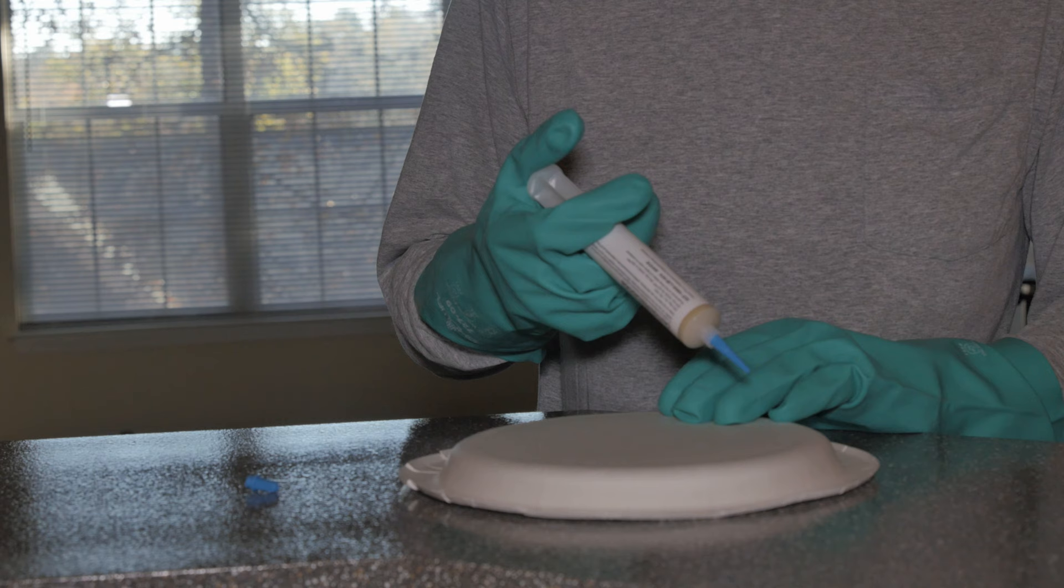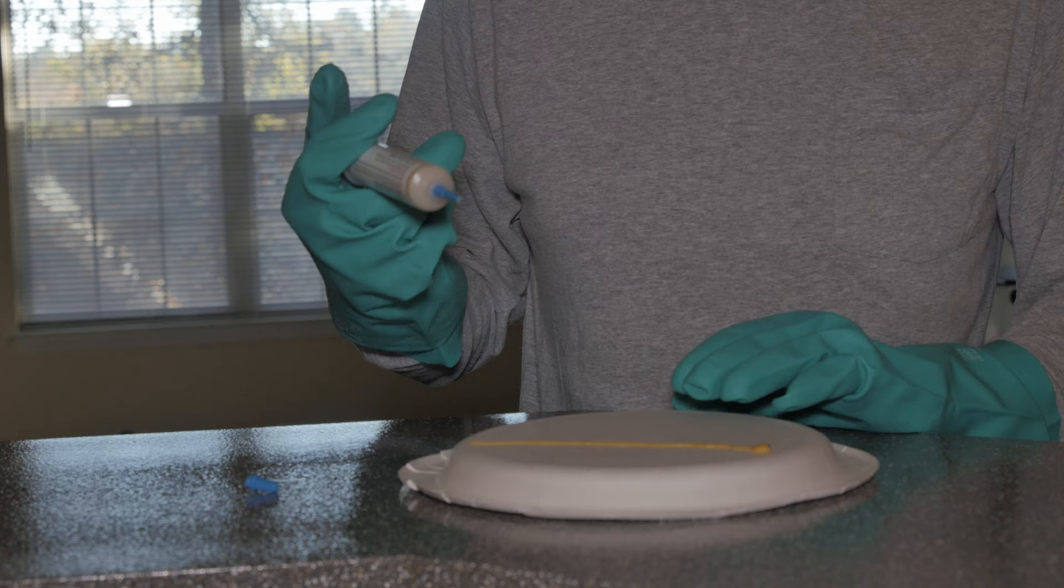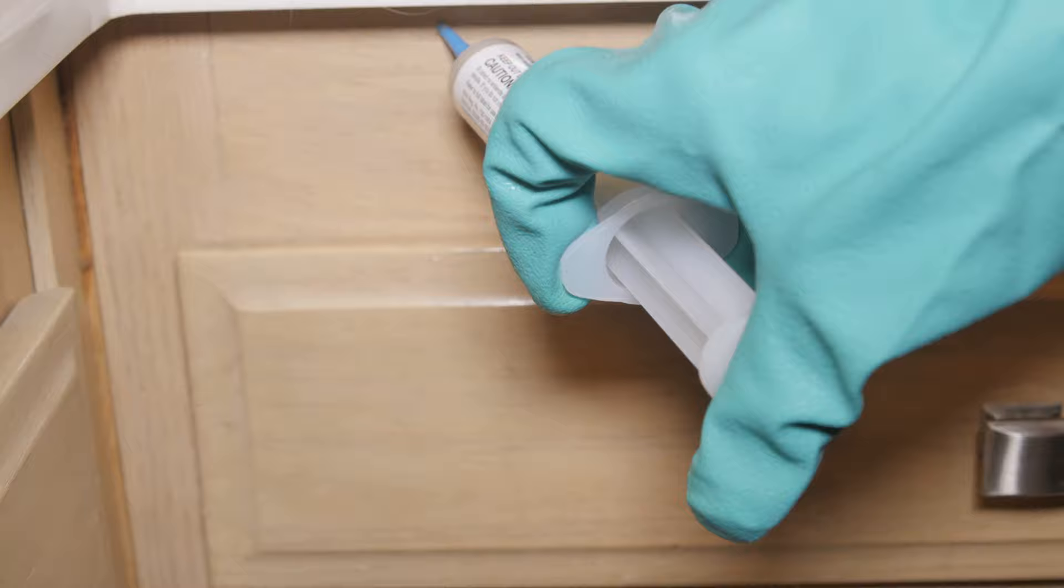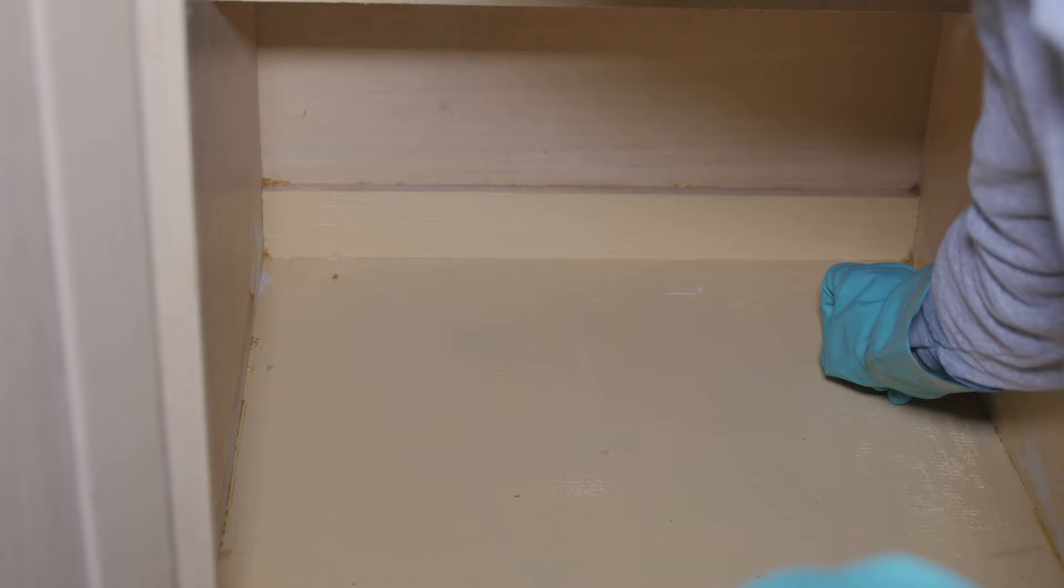Do not apply the bait in a long bead like caulk or in large spots. To roaches, these large gel placements will look like food that is too big for their mouths to eat, and they will avoid this bait. Each bait placement should be placed 8 to 10 inches apart.